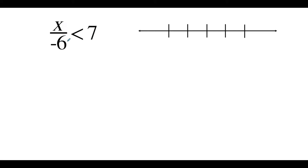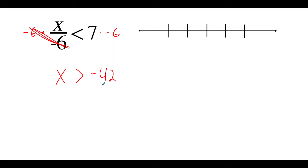In the next example we've got x over negative 6 is less than 7. x over negative 6 means x divided by negative 6, so we multiply both sides by negative 6. On the left we get x, and since we multiplied by a negative we reverse the inequality symbol. Then 7 times negative 6 gives negative 42, so x is greater than negative 42. I put negative 42 in the middle — no equals sign means an open circle, and numbers bigger than negative 42 are to the right, so I shade the arrow pointing right.